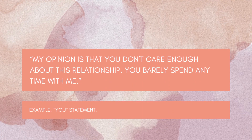For example, you may say something like: "My opinion is that you don't care enough about this relationship. You barely spend any time with me." And that's reproach. It's criticism. It's aggressive, and it does not convey anything about you — how you feel or what you think about the relationship.